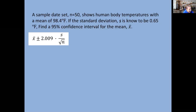Another example follows to try this method. A sample data set, n equals 50, meaning the data set had 50 data in it, shows human body temperatures with a mean of 98.4 degrees Fahrenheit. If the standard deviation s is known to be 0.65 degrees Fahrenheit, find a 95% confidence interval for the mean.